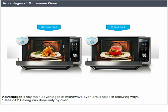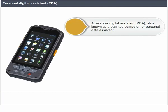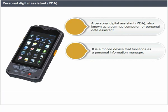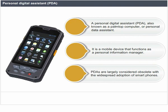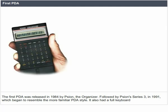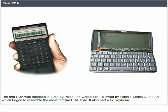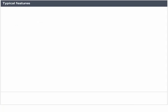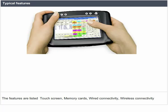A personal digital assistant (PDA), also known as a palm-top computer or personal data assistant, is a mobile device that functions as a personal information manager. PDAs are largely considered obsolete with the widespread adoption of smartphones. The first PDA was released in 1984 by Psion, followed by Psion Series 3 in 1991, which had a full keyboard. Typical features include touch screen, memory cards, wired connectivity, and wireless connectivity.